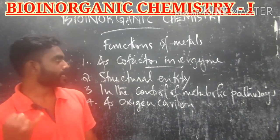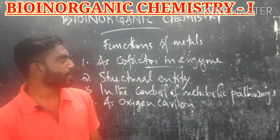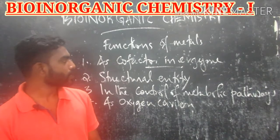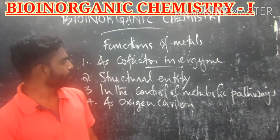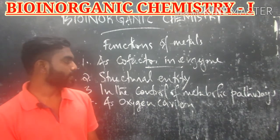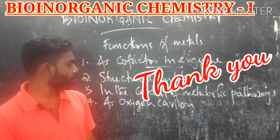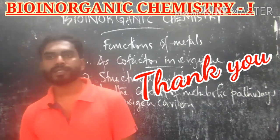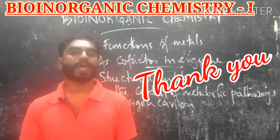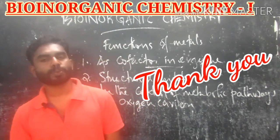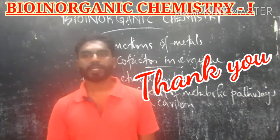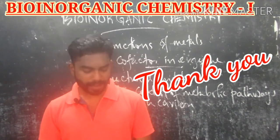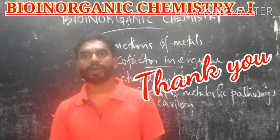In summary, the five functions of metals in biological systems are: as cofactors in enzymes, as structural entities, in the control of metabolic pathways, as oxygen carriers, and maintenance of osmotic pressure and pH regulatory actions.